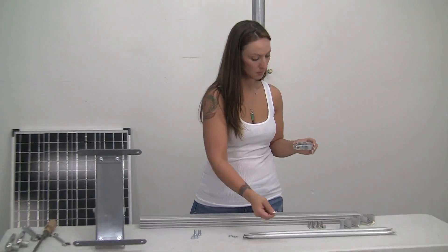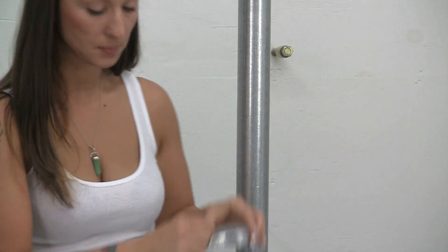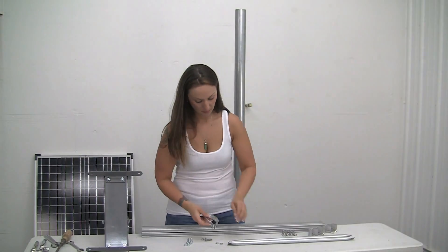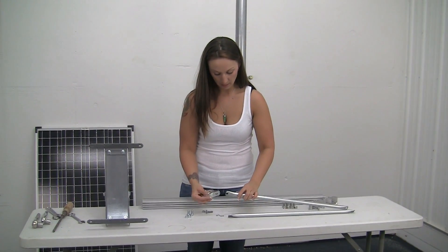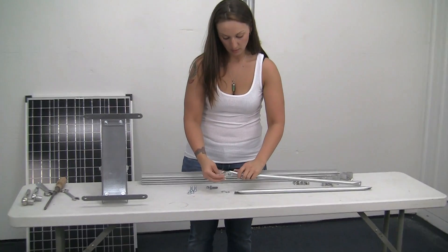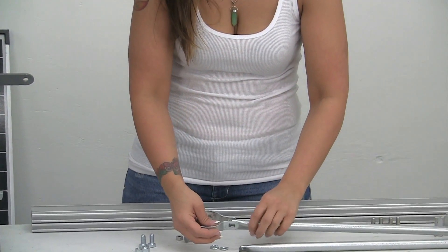We're going to take our arms and put them on and then slide it over the pole. Make sure when you're assembling, one goes in the middle and one goes on the outside.